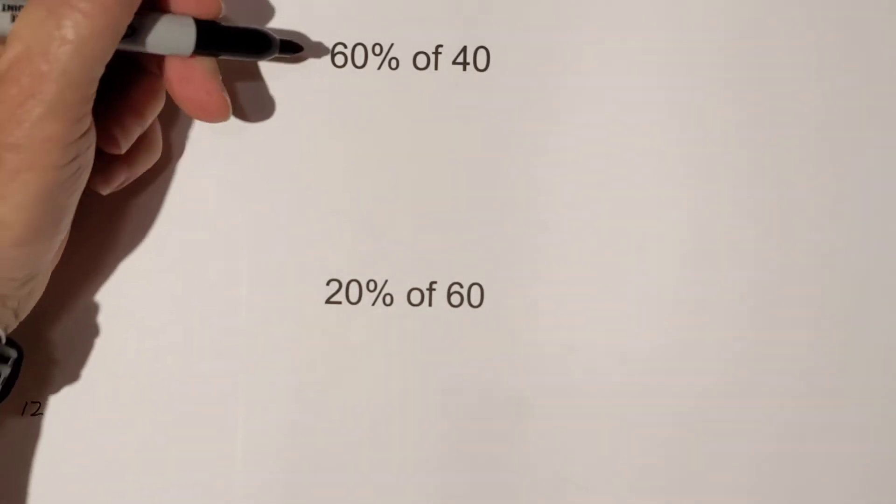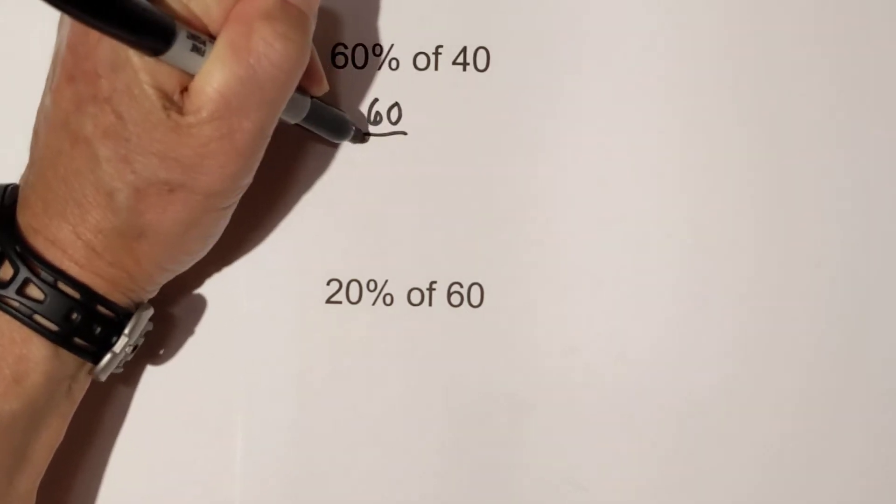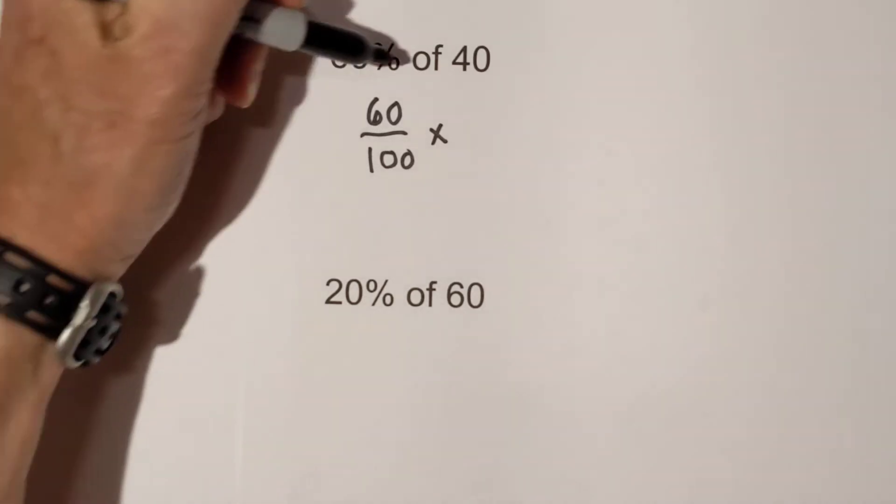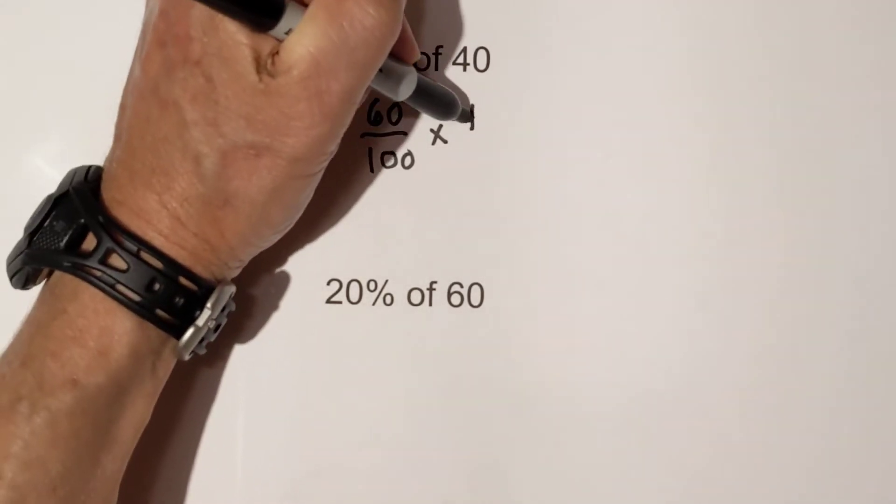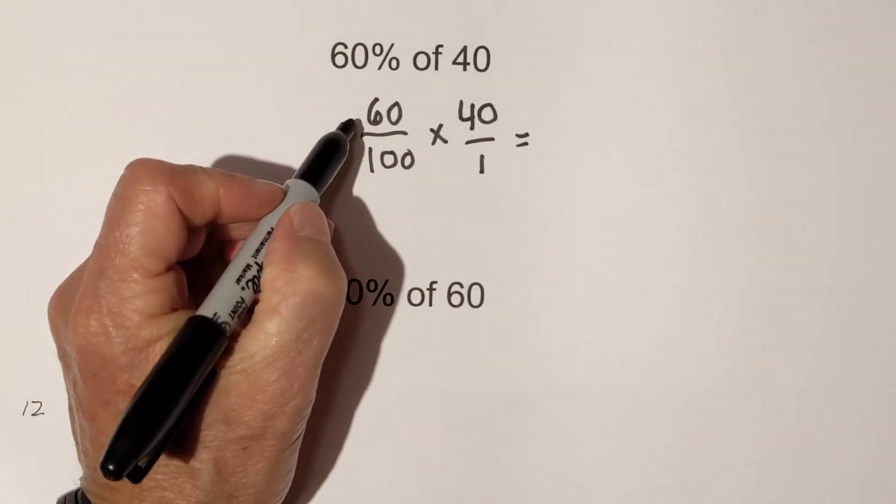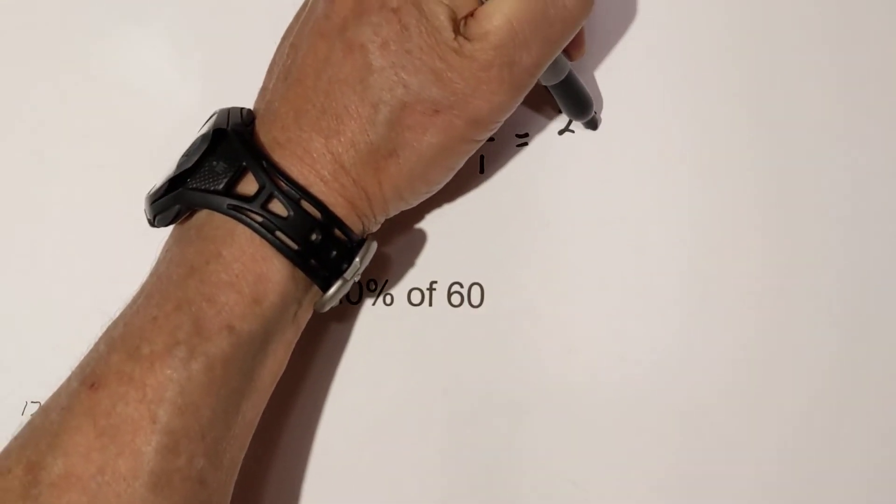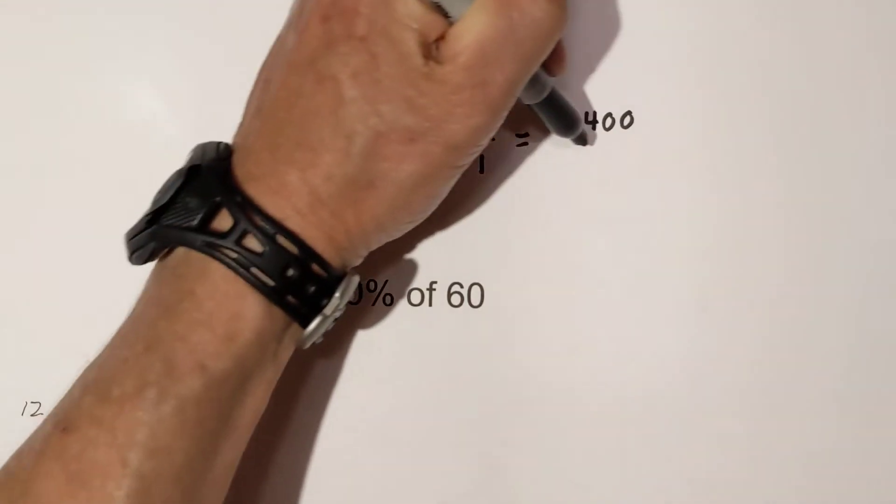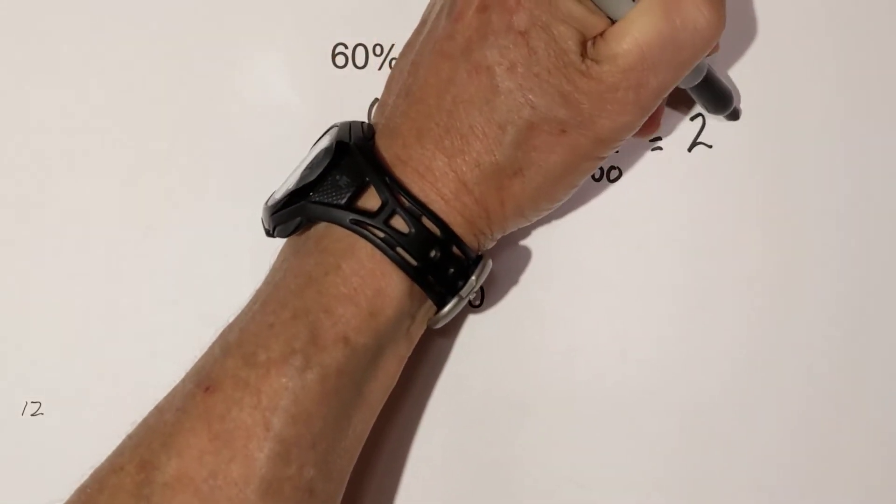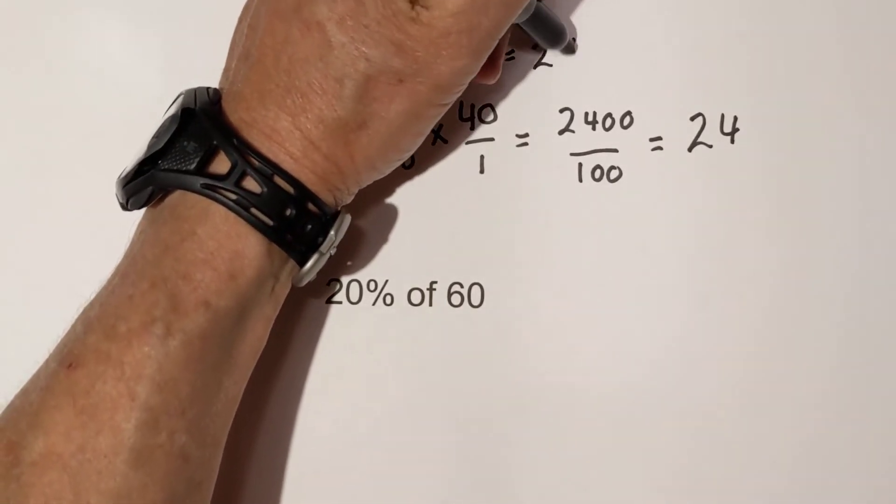Well the way I like to complete it is you can rewrite 60% as just 60 over 100 and then basically you're multiplying it by 40. So I'm going to put 40 over 1. When you multiply, just multiply straight across and 60 times 40 is 2400. 100 times 1 is 100 and then when you simplify it is simply 24. So 60% of 40 equals 24.